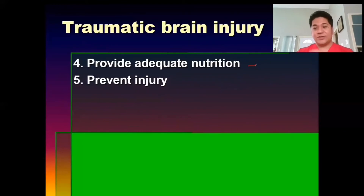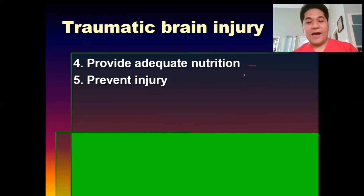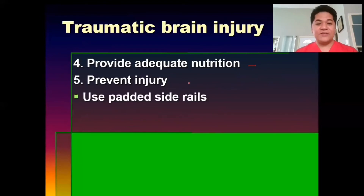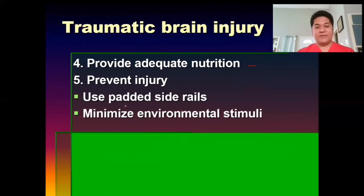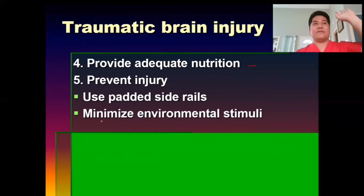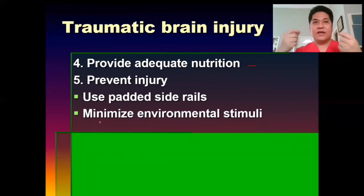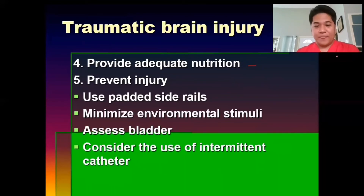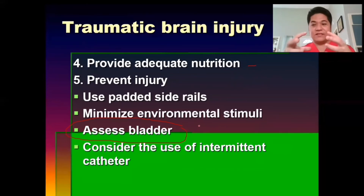Continuing nursing management: provide adequate nutrition. If the client is comatose, they still need IV therapy or similar support. Prevent injury by using padded side rails in case they abruptly move their arms, legs, or start kicking. Minimize environmental stimuli — for instance, dimming the lights and providing a warm environment by giving the client a blanket. Also assess the bladder, because emptying the bladder is important — a full bladder causes pain and stress to the client.